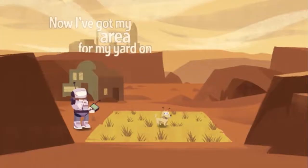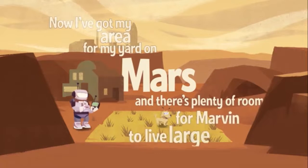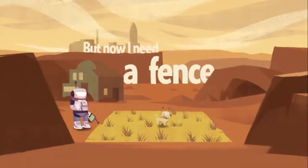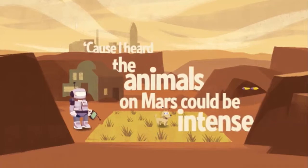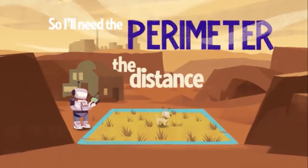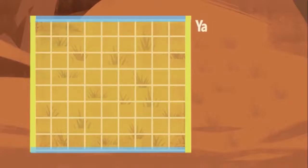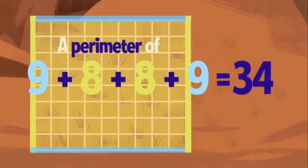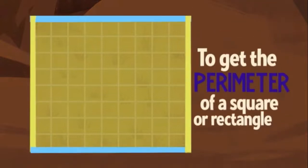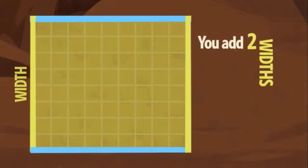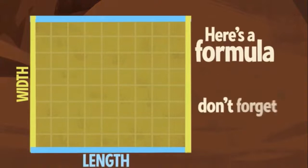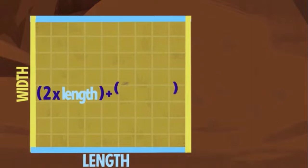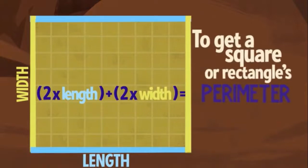Now I've got my area for my yard on Mars and there's plenty of room for Marvin to live large. But now I need a fence because I heard the animals on Mars could be intense. So I'll need the perimeter — the distance around my whole yard. You just add up the length of the sides. Nine plus eight plus eight plus nine is a perimeter of 34 feet — and that's regular units, not units squared. To get the perimeter of a square or rectangle, you add two widths plus two lengths. Here's a formula: two times length plus two times width to get a square or rectangle's perimeter quick.